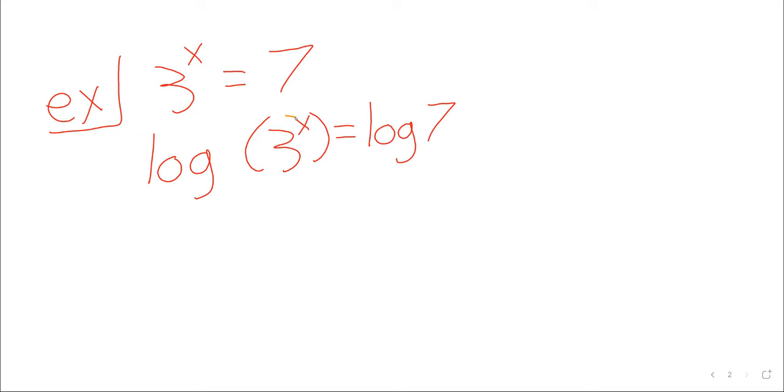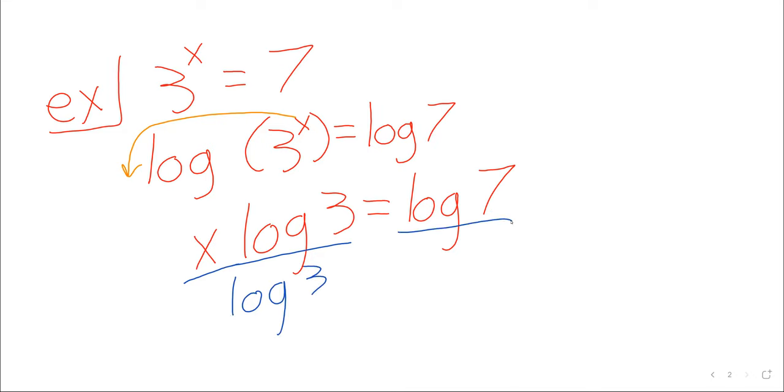This x goes down in front of the logarithm. The log of 3 is just a number. The log of 7 is also just a number. So x times a number equals another number. And if we divide both sides of this equality by the logarithm of 3, we've solved our equation.